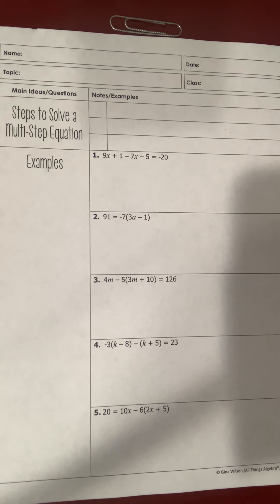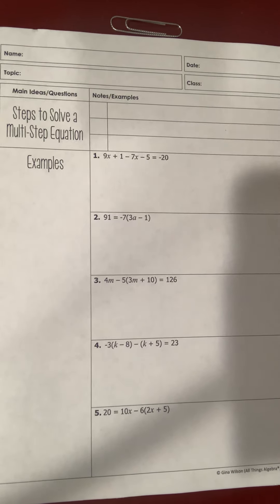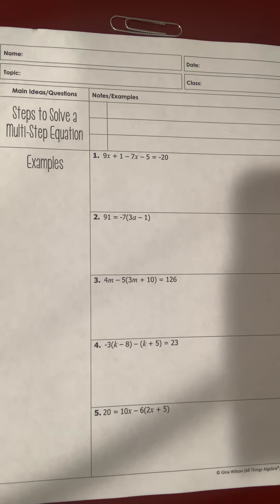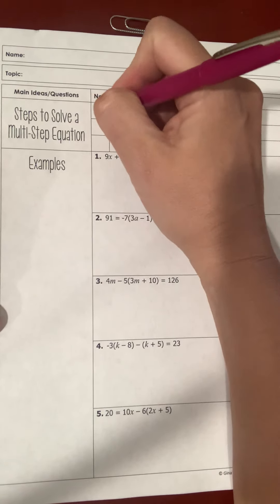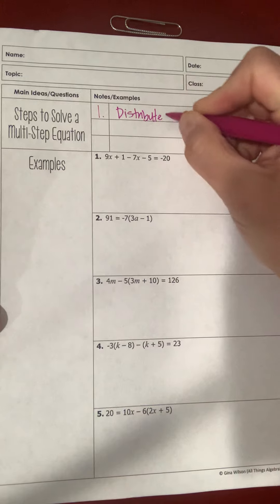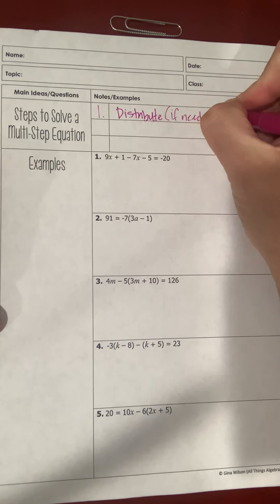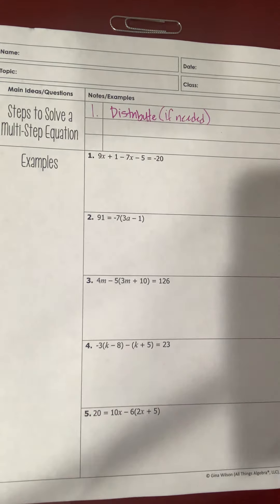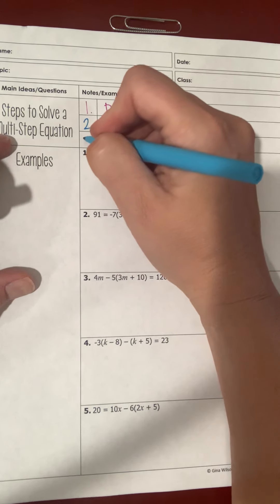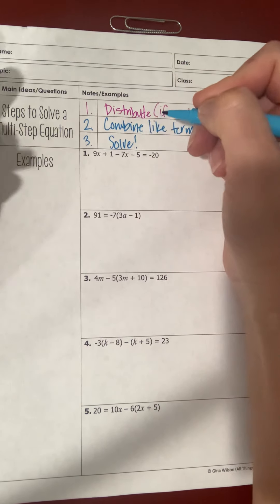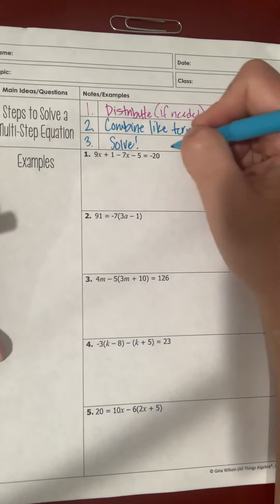In this lesson we're going to talk about multi-step equations. I'm going to show you the steps, write them out, and then walk you through some examples. Step one: distribute if needed. Step two: combine like terms. Step three: solve. And step four: check it — this is how you guarantee yourself a 100 on anything we do in math.